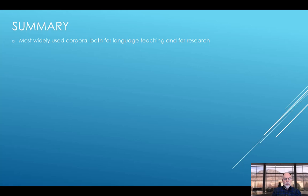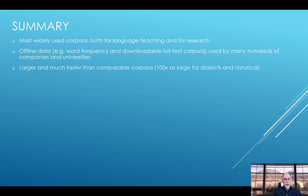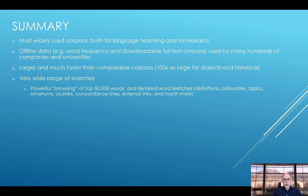In summary, the corpora from EnglishCorpora.org are the most widely used corpora in the world, both for language teaching and for research. There's also offline data — for example, word frequency data and downloadable full text corpora — that have been used by many hundreds of companies and universities throughout the world. The corpora are much larger and much faster than comparable corpora; for research on dialects and historical change, they're about 100 times as big as the next largest corpora. There's an incredibly large and wide range of searches, powerful browsing of the top 60,000 words in the corpora, and detailed word sketches for each of these words: definitions, collocates, topics, synonyms, clusters, and concordance lines.